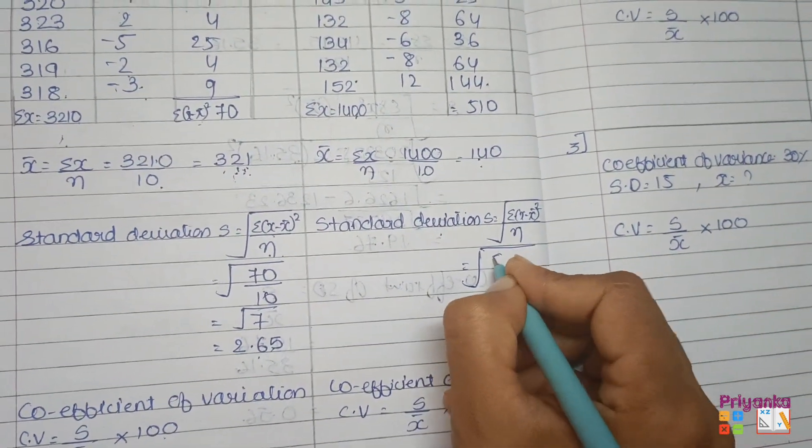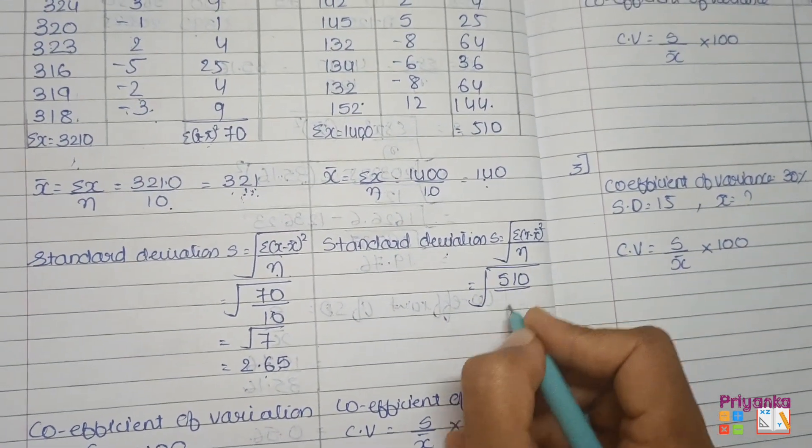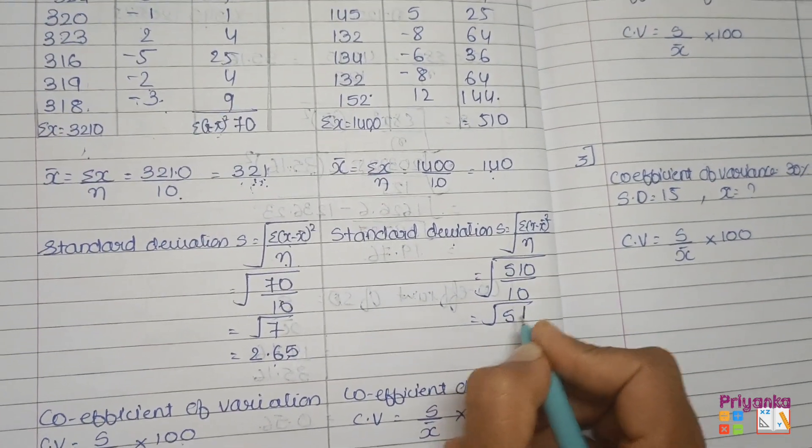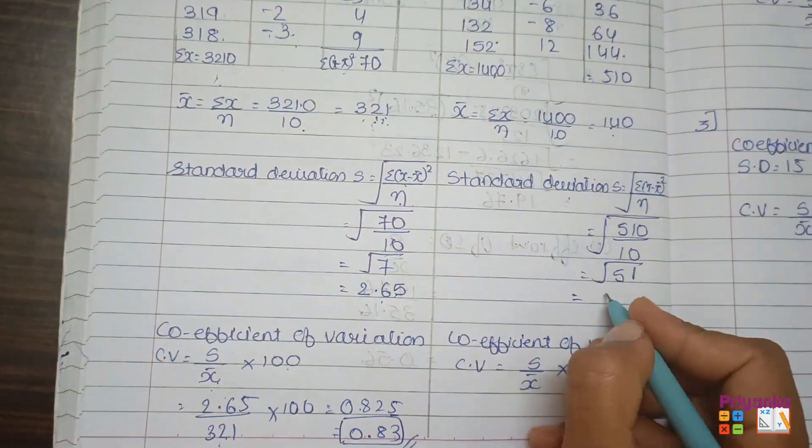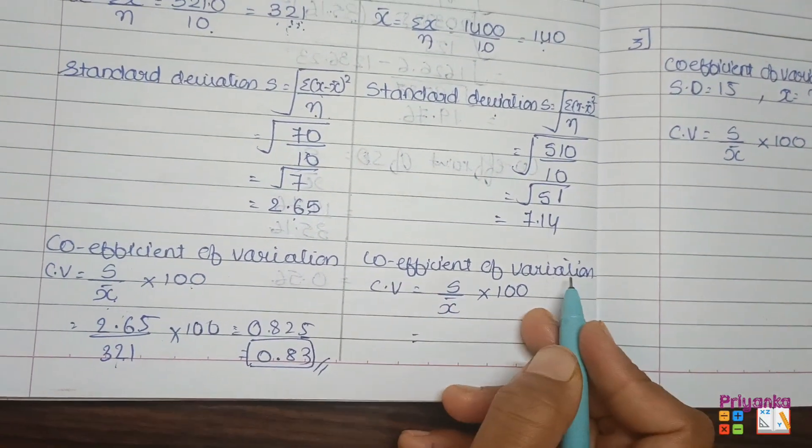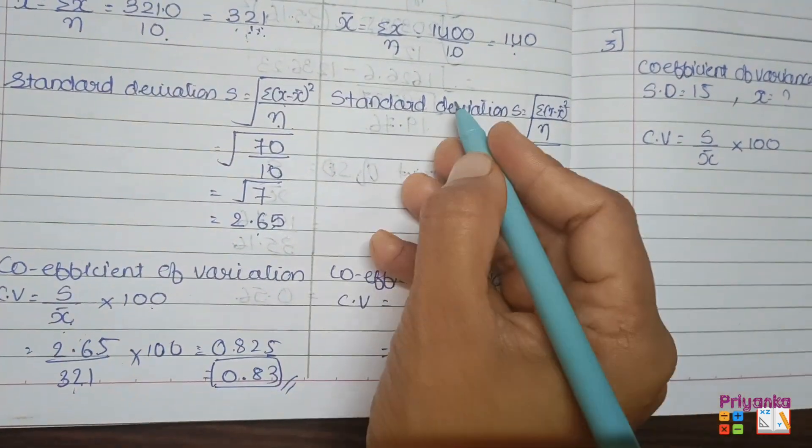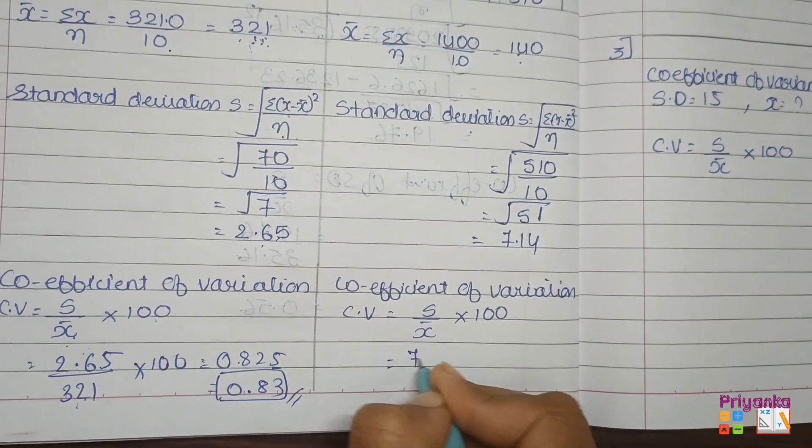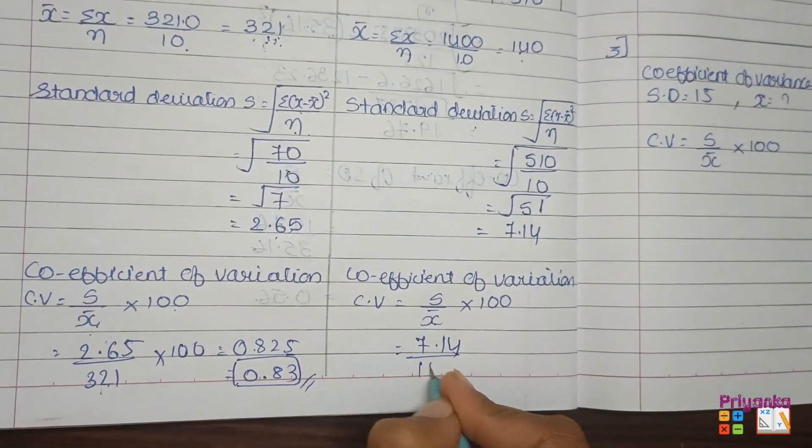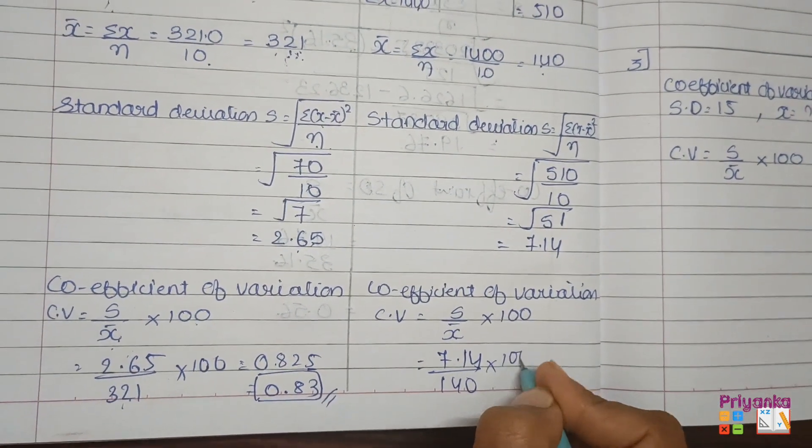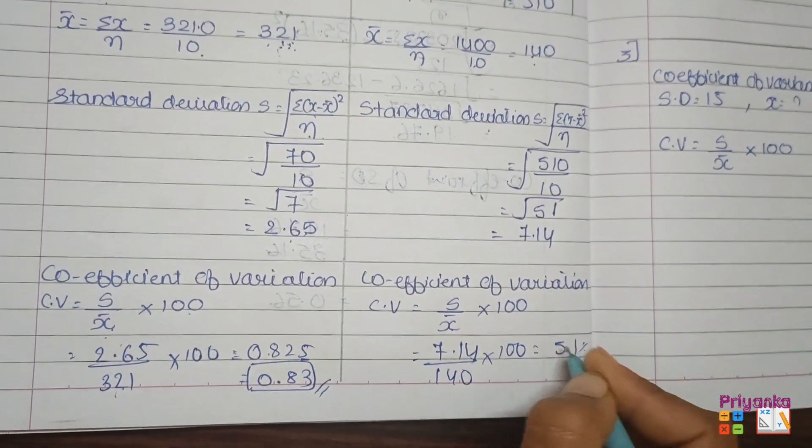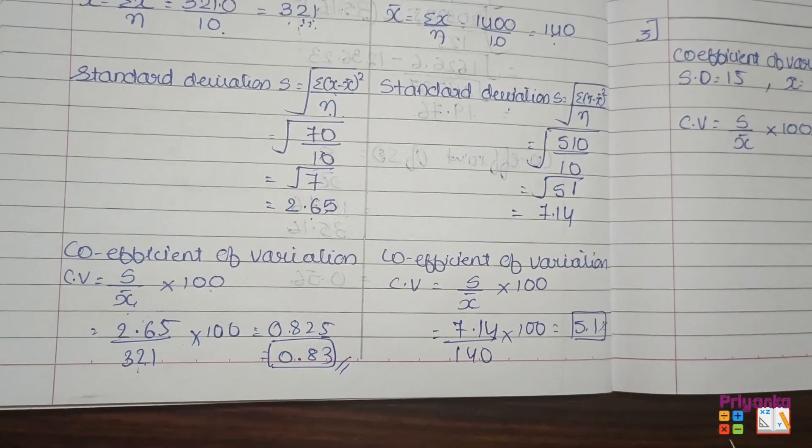We're going to keep the value in the formula: 510 divided by 10, so remove the root of 51 and the answer is 7.14. Now just keep into the formula of coefficient of variance - that is standard deviation 7.14, mean that is 140 into 100. And here we get the answer 5.1 percentage of the coefficient of variance.